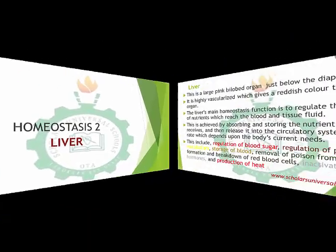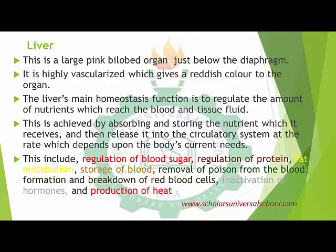The liver itself is a pink bilobed organ that is located below the diaphragm. It is highly vascularized with blood vessels — that means it has lots of blood vessels that give it its reddish color. The main homeostatic function is that it regulates the amount of nutrients which reach the blood and the tissue fluid. When nutrients are being channeled into the liver, it regulates the amount that is released into the blood by absorbing and storing those nutrients and releasing them into the circulatory system at a rate which depends upon the body's current need.